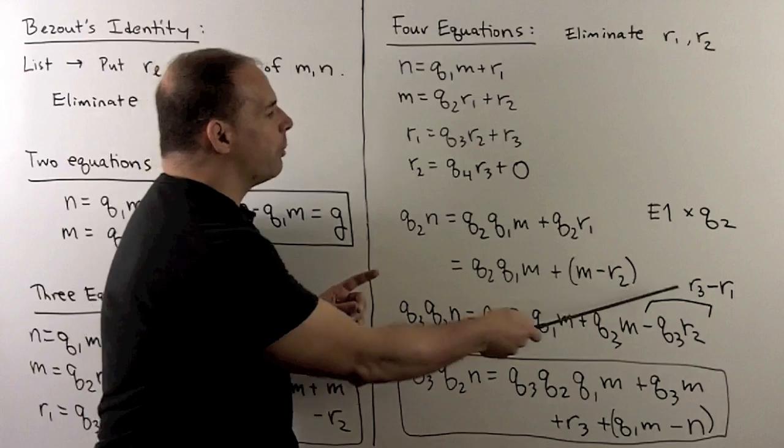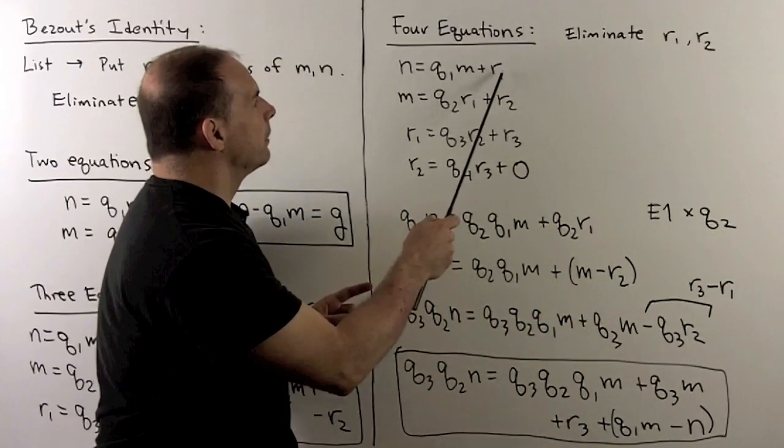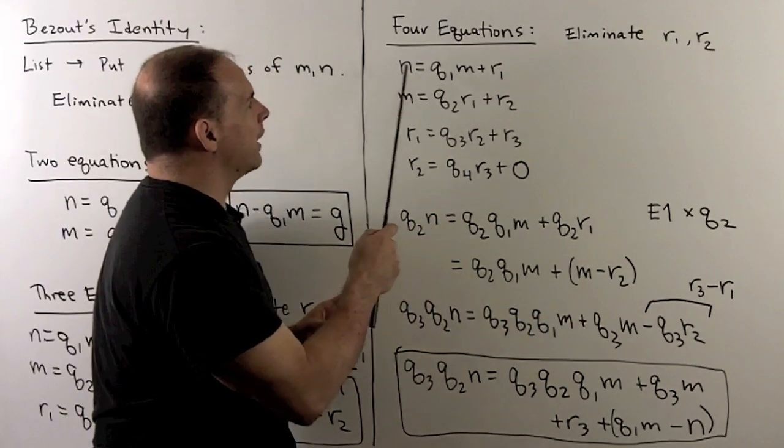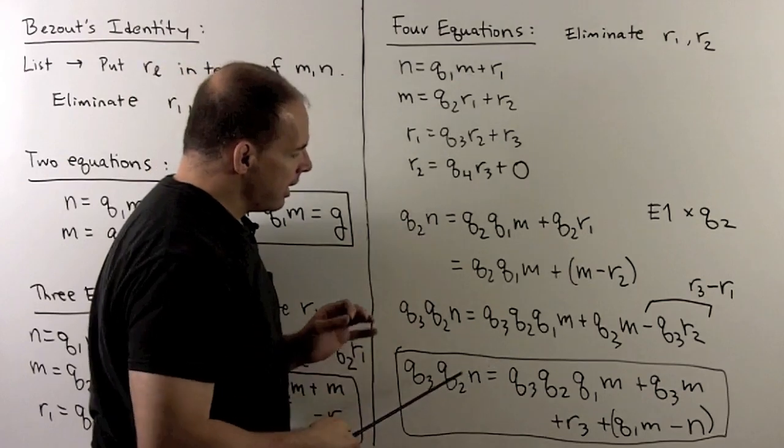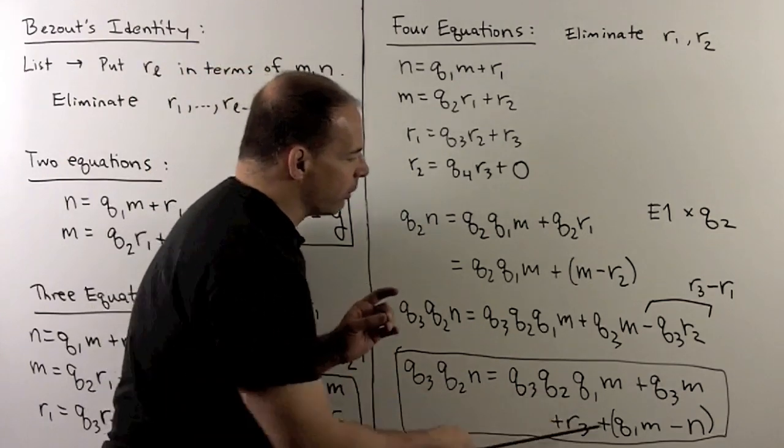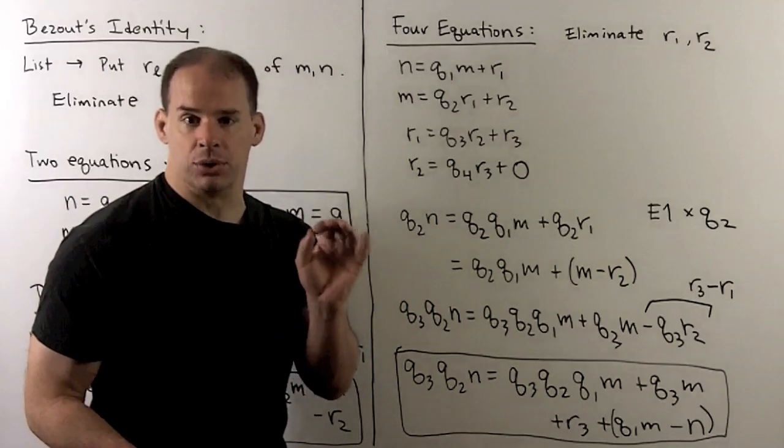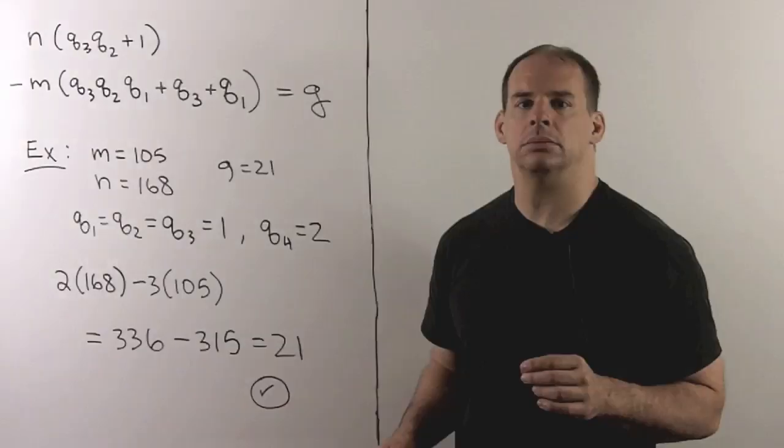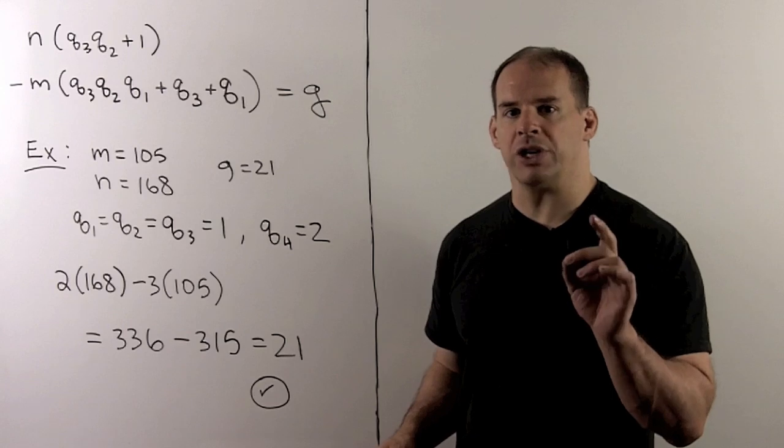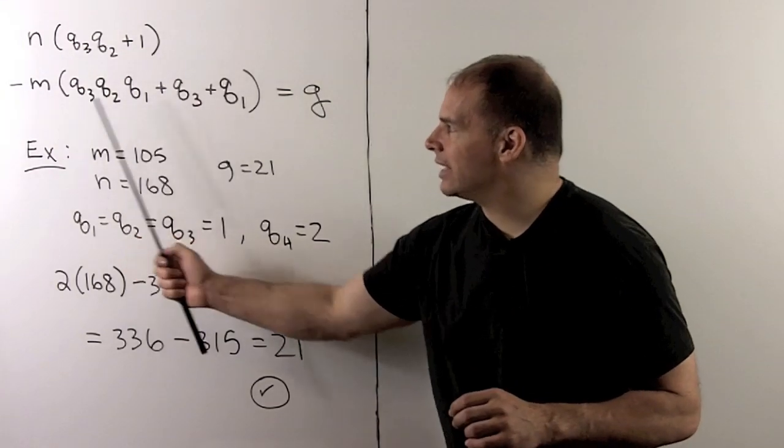I need to get rid of this r1. So, to do that, we go back to the first equation, and then we can replace r1 with n minus q1, m. Then our final equation is in the form that we want. Of course, we have to separate everything out to make it look like Bézout's identity. If we straighten the last equation out, Bézout's identity takes this form.